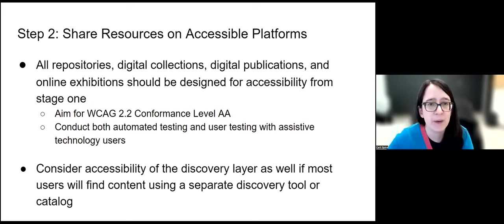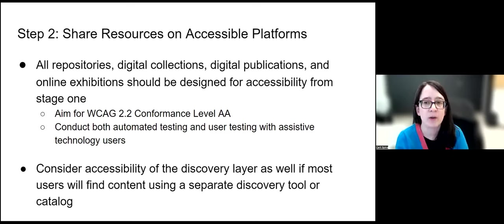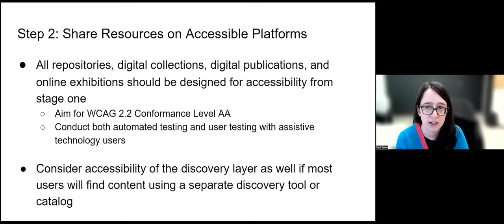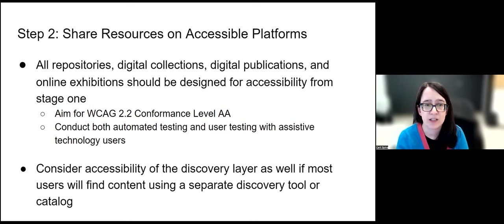Next, you want to think about the platforms on which you are sharing your resources. From the point at which you're building or updating these platforms, think about the accessibility of all repositories, digital collections, digital publications, online exhibitions — all of these different online tools your institution uses to share research and information need to be designed for accessibility from stage one.